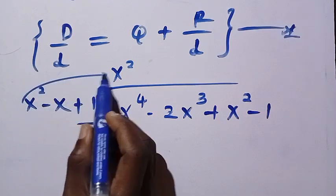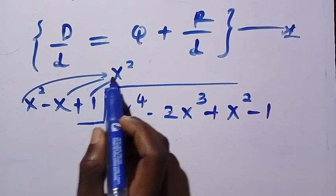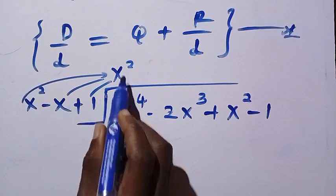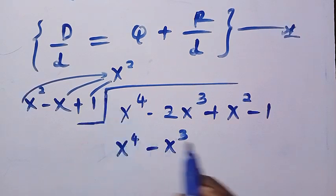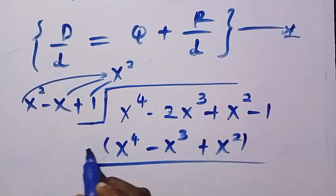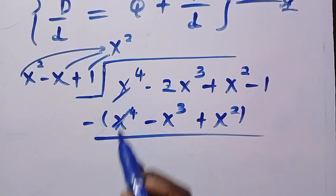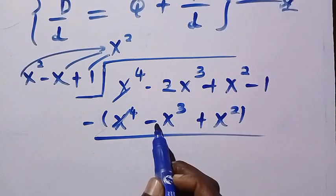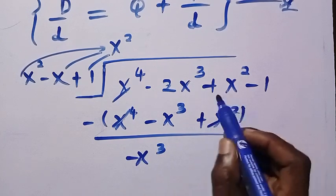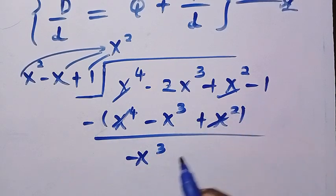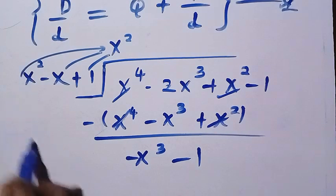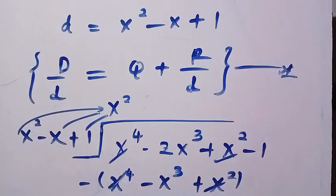We multiply x squared by every term of the divisor: x squared times x squared gives x to the power of 4, then minus x to the power of 3, then plus x squared. Introducing negatives and adding to the dividend: negative 2x cubed plus x cubed gives negative x cubed, and the x squared terms cancel, leaving only minus 1. We still have x cubed, so we divide: x cubed divided by x squared gives negative x as the next quotient term.